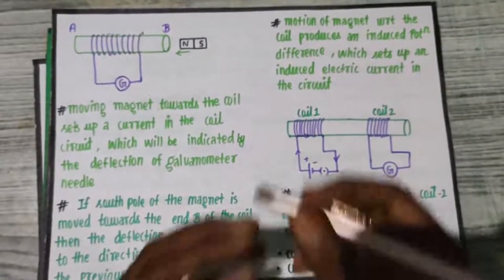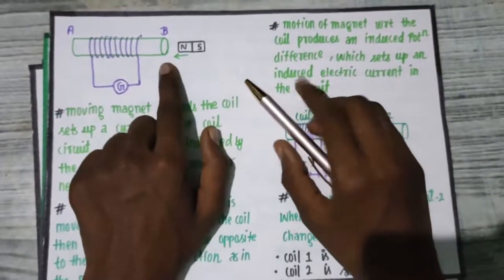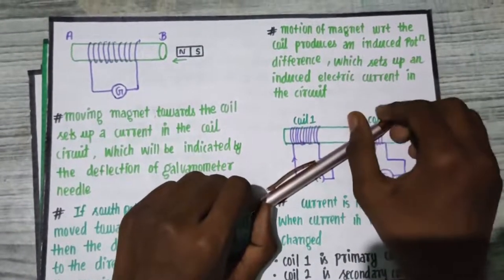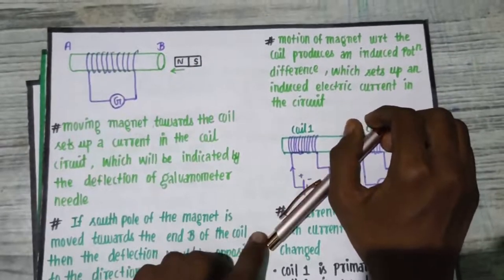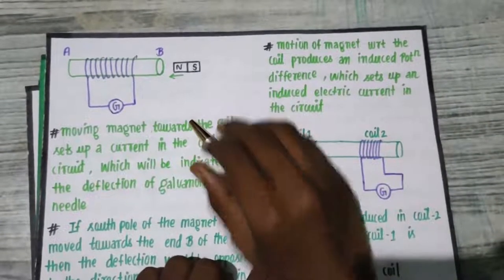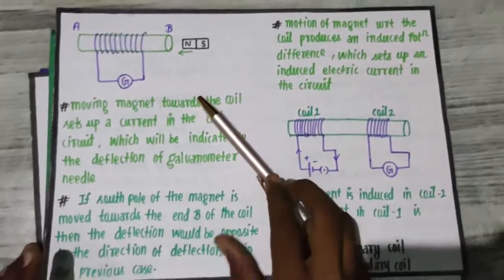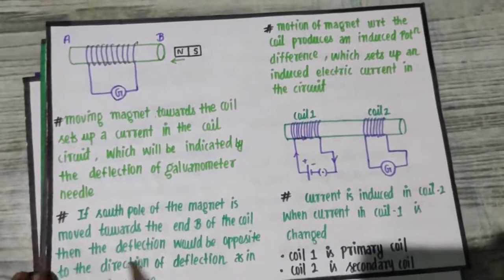That is the deflection, the galvanometer deflection is the opposite direction. Suppose now the north pole of the magnet is going to be the right side. Now the south pole of the magnet is going to move towards the end B of the coil.